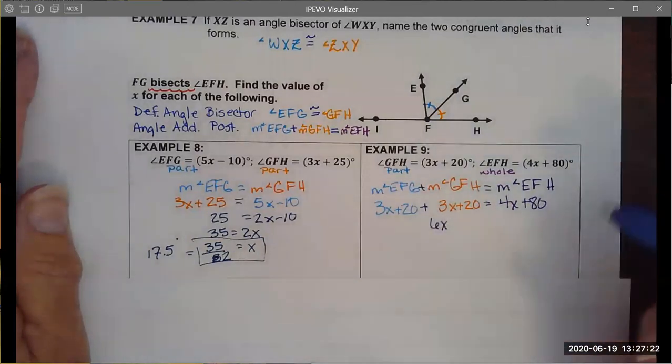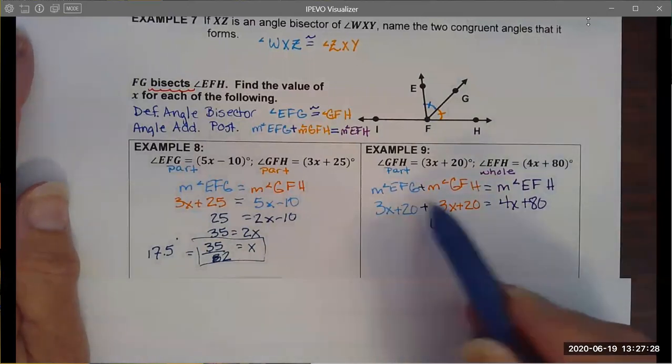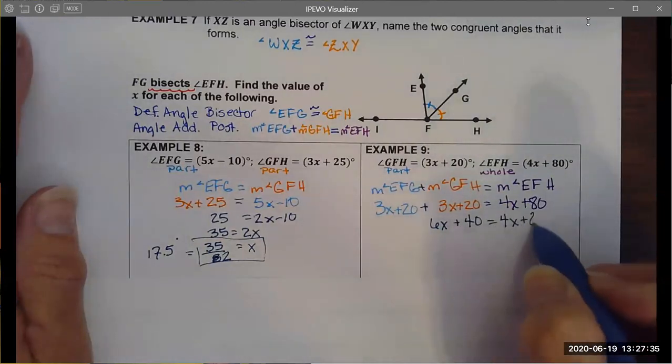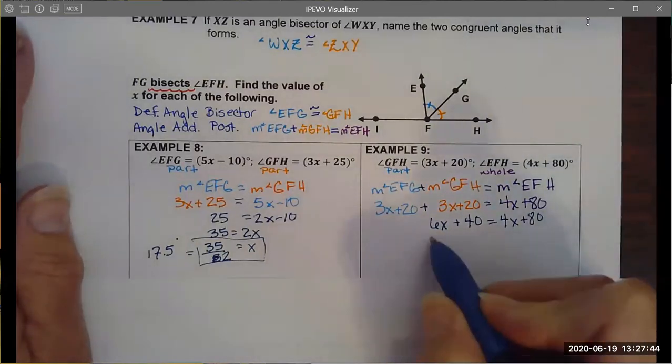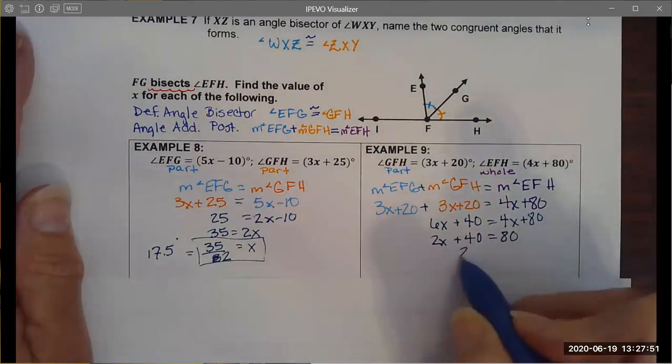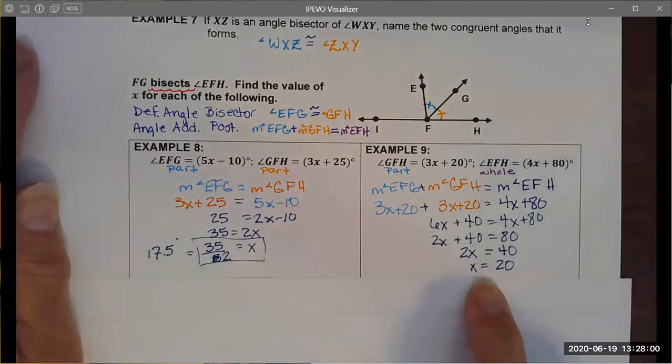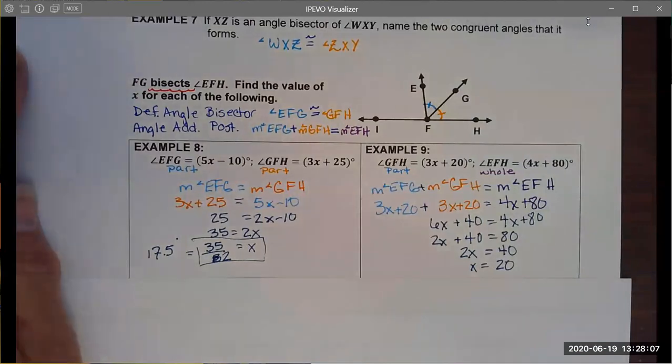That's how we build the angle addition postulate using the definition of an angle bisector. Then from here, this is the geometry, this is the substitution, and doing my substitution requires me to understand a lot about the geometry. The rest is just algebra. If I wanted to formalize this as a proof I would say that this step is definition of congruency, this step is substitution, here I've combined like terms. Next I'm going to subtract x from both sides using subtraction property, I'm going to use the subtraction property again, and lastly I'm going to use the division property. I've identified the value of x based on definition of angle bisector and the angle addition postulate.